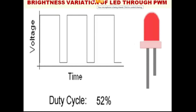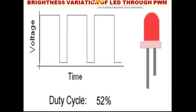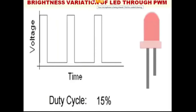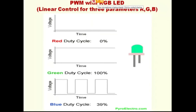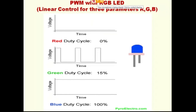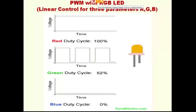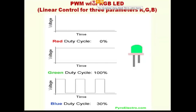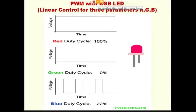The contrast control in the mobile phone is working just because of pulse width modulation. Now you can see the RGB LED — all three colors, three controls.